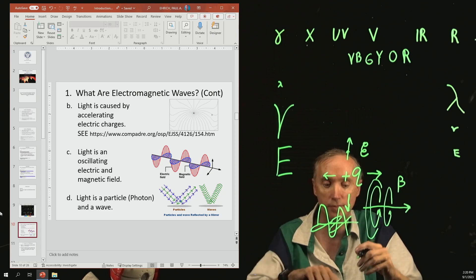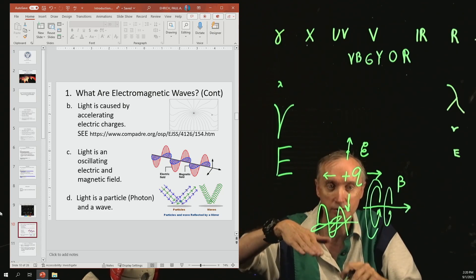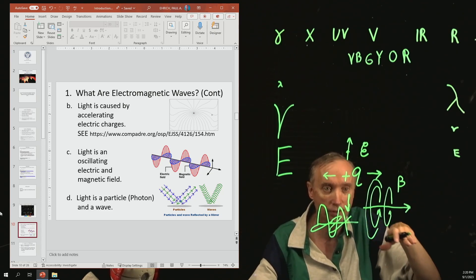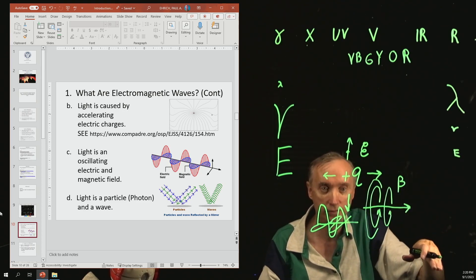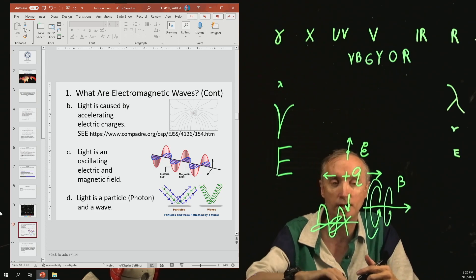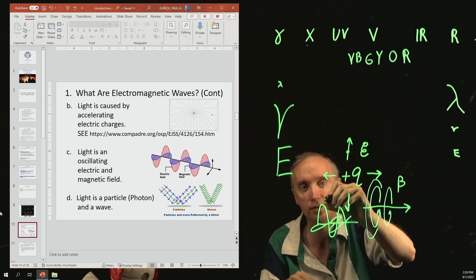So the magnetic field is sideways, going in and out as the electric field is going up and down. That's why we say it's an electromagnetic field. The distance from here to here would be the wavelength of that particular type of light.